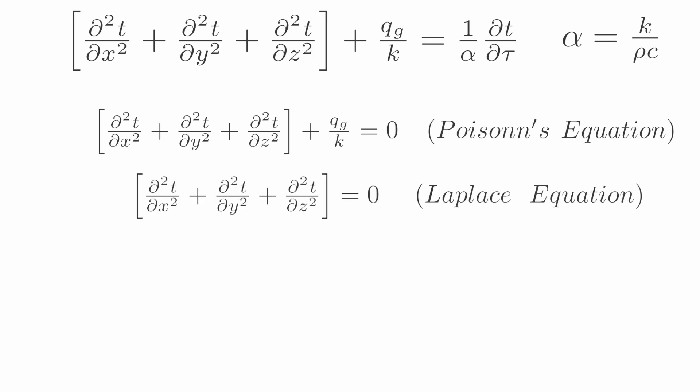The third case: no heat generation but unsteady heat flow, meaning heat depends on time. In that case, the equation we get is called the Fourier equation. These equations are named this way because they resemble these classical equations.